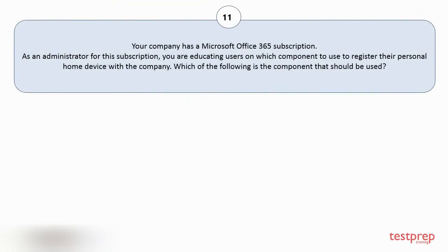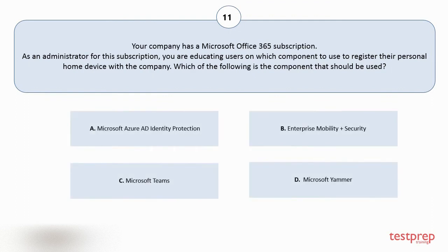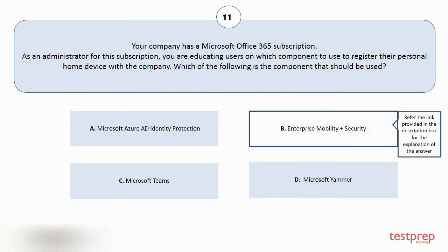Question number eleven. Your company has a Microsoft Office 365 subscription. As an administrator for this subscription, you are educating users on which component to use to register their personal home device with the company. Which of the following is the component that should be used? Your options are: A. Microsoft Azure AD Identity Protection. B. Enterprise Mobility Plus Security. C. Microsoft Teams. D. Microsoft Yammer. The correct answer is option B.